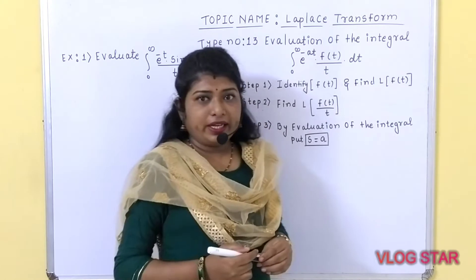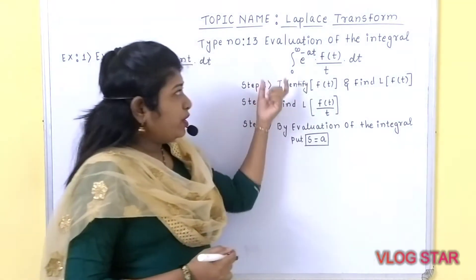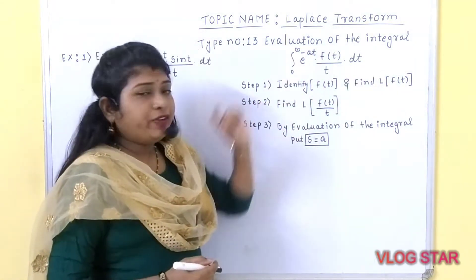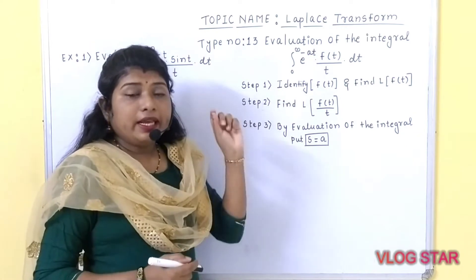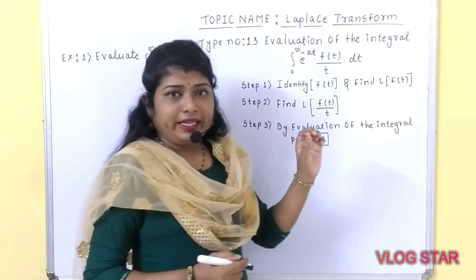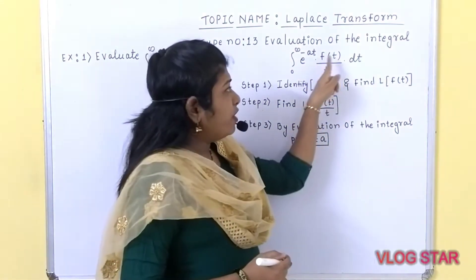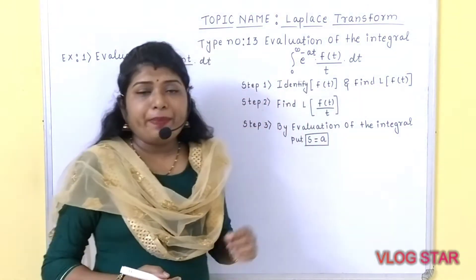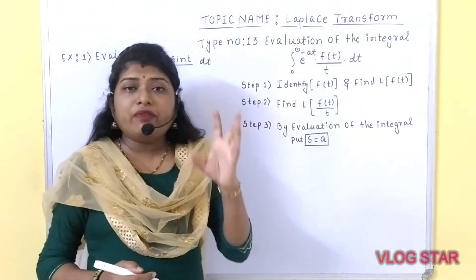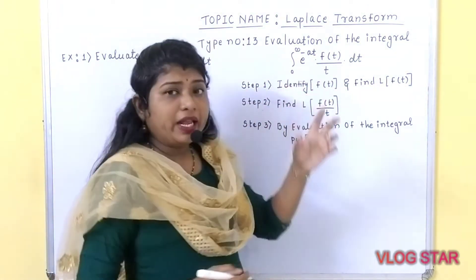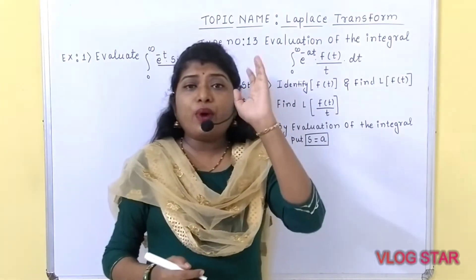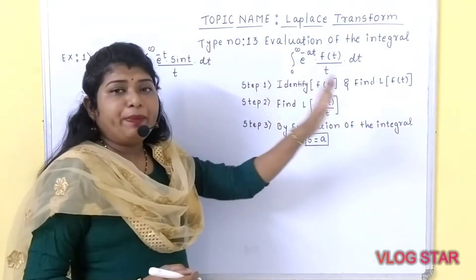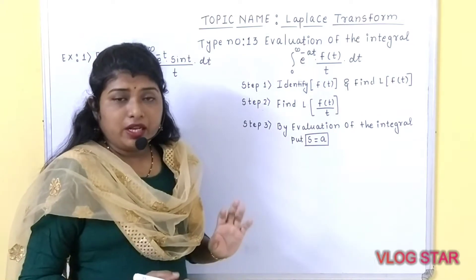What is basically type number 13? It is the evaluation of the integral: integration from 0 to infinity of e raised to minus at, times f of t upon t, into dt. If the given question is in this format, you need to identify it as related to type number 13.